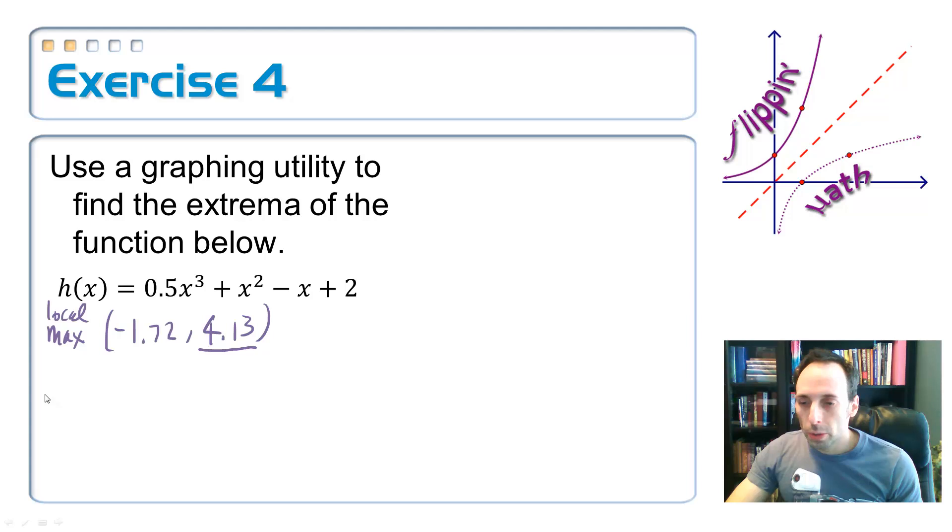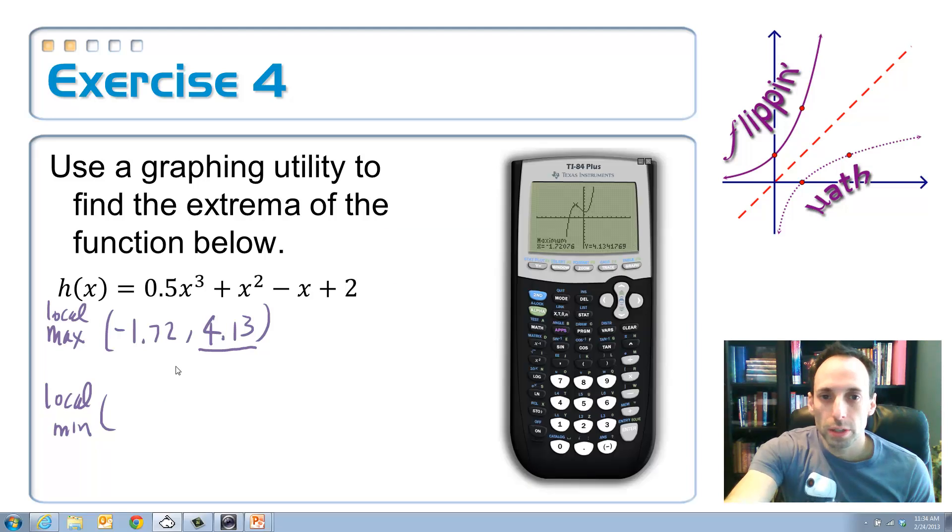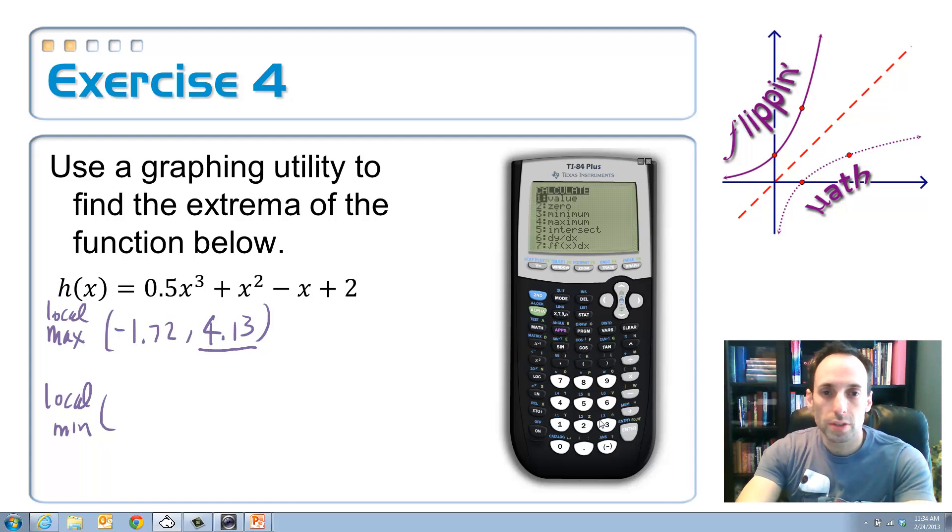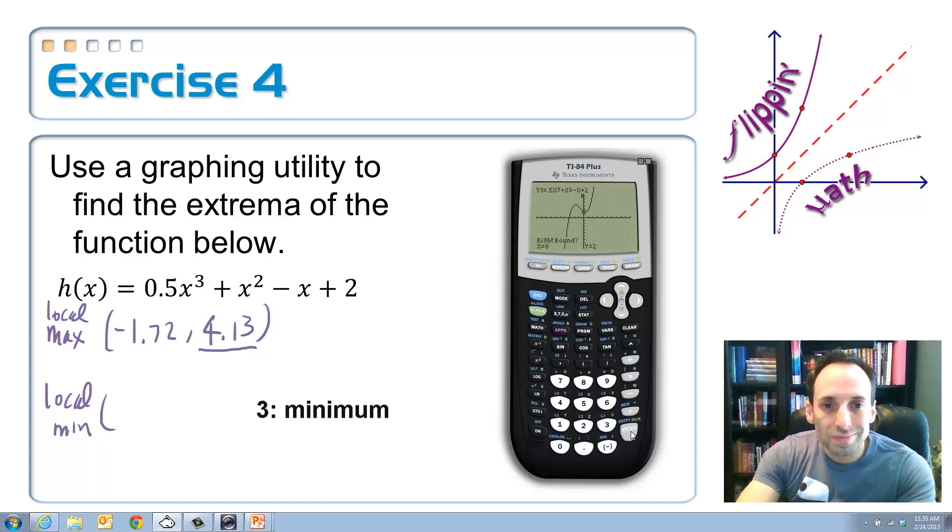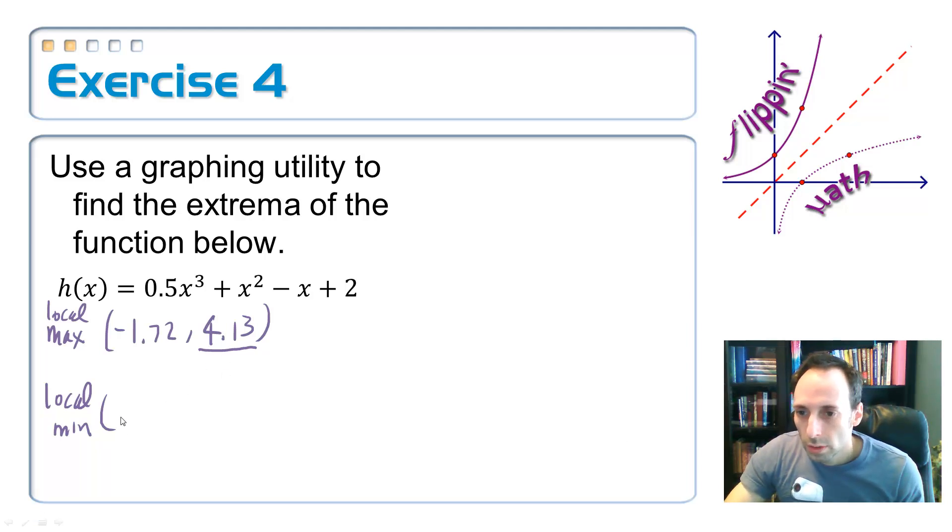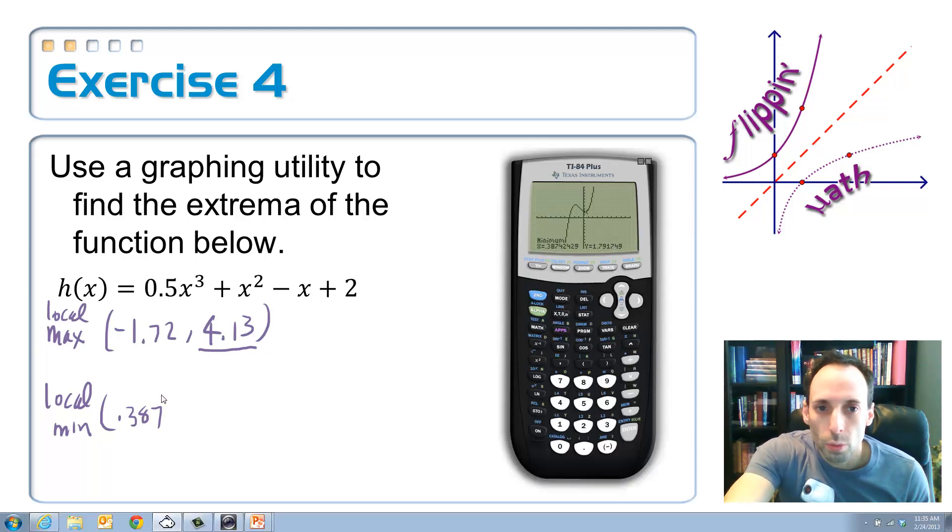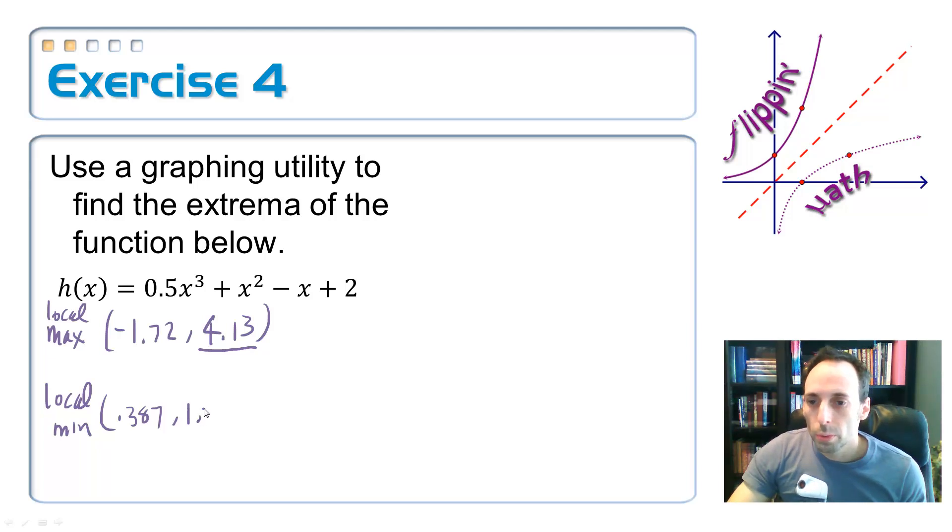Now we had one more, and it was a local minimum. And let's get the coordinates for that one the same kind of way. So go back to the calculate menu, second, trace. This time I'm going to choose number 3 for minimum. And how about we go from 0 to maybe 3. That should cover it. Guess? No, don't want to. We got 0.387 and the y value 1.79. And the local minimum value is actually 1.79, the y value.